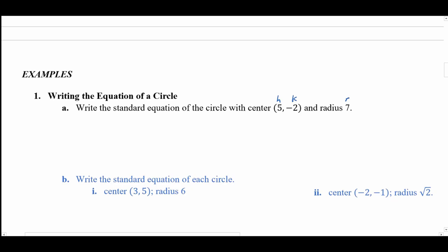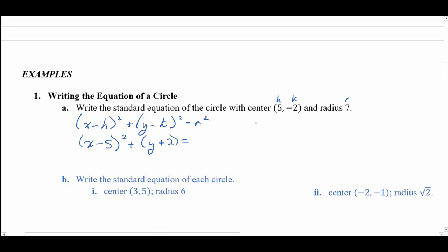Using the standard form circle equation: (x − h)² + (y − k)² = r². We plug in the numbers: (x − 5)² + (y − (−2))² = r². Since k is negative 2, minus negative 2 gives positive 2. And r = 7, so 7² = 49. The standard form circle equation for this circle with center (5, −2) and radius 7 is: (x − 5)² + (y + 2)² = 49.